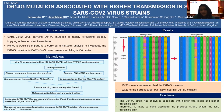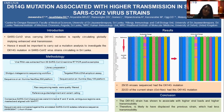The D614G strain has been shown to be associated with higher viral loads, meaning that patients infected with this virus strain tend to shed higher viral loads compared to patients infected with the previous strain. Therefore it has higher transmissibility as well. According to our findings, viral strains carrying the D614G mutation likely displaced the previous strain, which had less transmissibility, and may have caused the current outbreak.